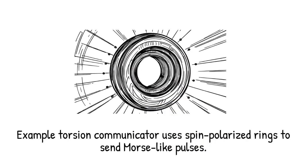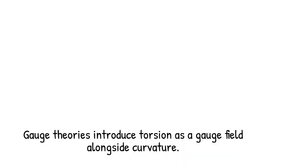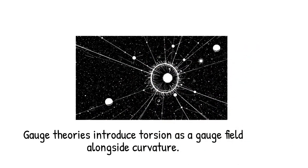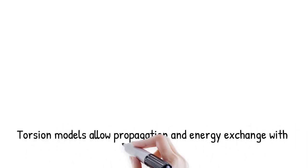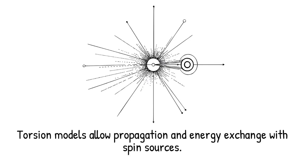In gauge theories of gravity, one gauges the Lorentz group naturally introducing torsion as a gauge field alongside the curvature described by the metric. Teleparallel gravity reformulates general relativity purely in terms of torsion, treating gravity as a force similar to electromagnetism. These mathematically consistent models provide formal settings in which torsion fields can propagate and exchange energy with spin sources, offering theoretical templates for imagining torsion-based signaling mechanisms, even though empirical support is lacking.